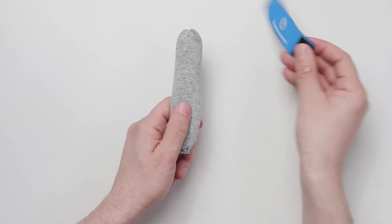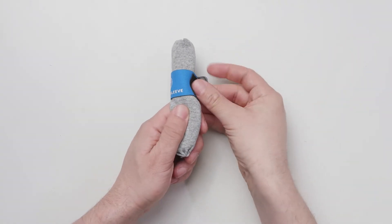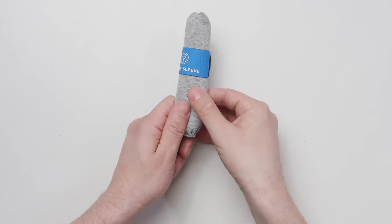Apply the power sleeve to the mid-shaft of the penis and attach the velcro. It should be snug but not tight.